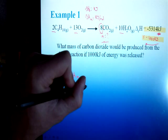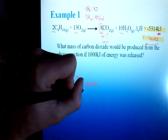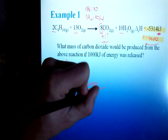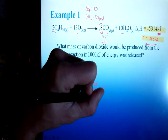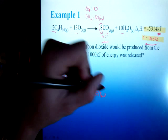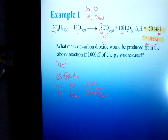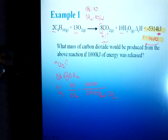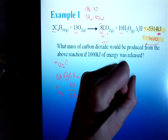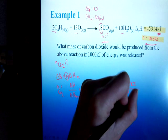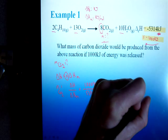The delta H is going to be my 1,000 kilojoules. The multi-step component of it involves getting this kilojoules per mole value. That's 5,314 kilojoules for the whole reaction, but I only need it as a per mole value for carbon dioxide. So that's going to be 5,314 kilojoules for 8 moles of CO2. That ends up being 1,000 kilojoules over 664.25 kilojoules per mole.